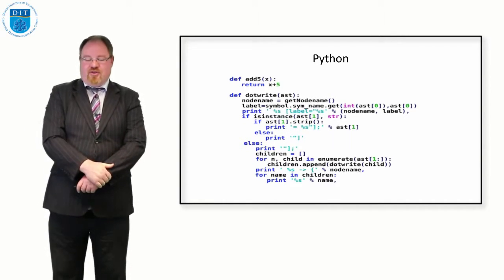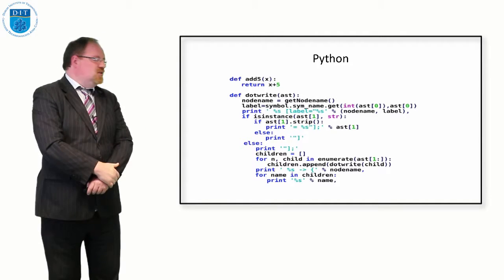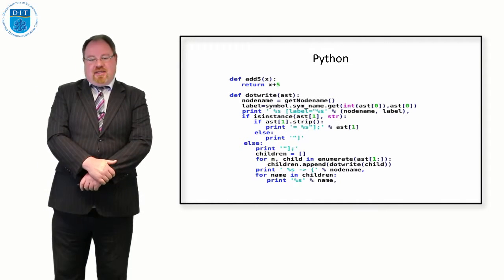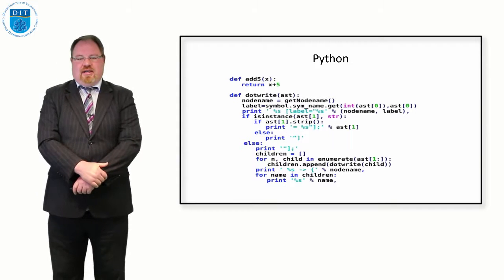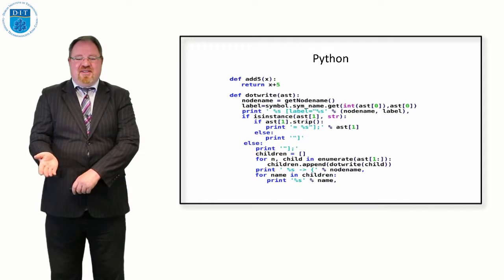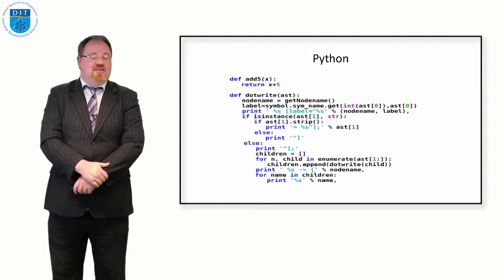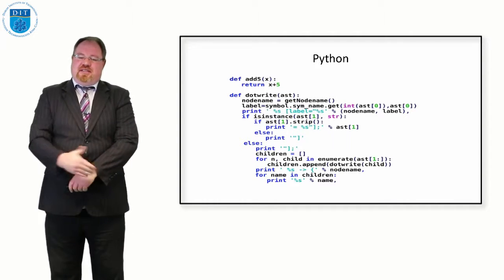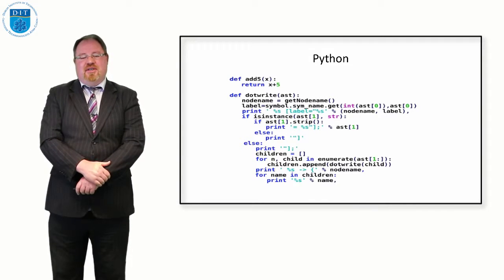Third generation languages are much more like English, much easier to understand. This is an example of a programming language, Python. In Python, this is what computer code looks like. Just to be clear, this is supposed to look like English for human beings. I know it doesn't quite look like English, but it looks a lot more like English than 11001001 does.